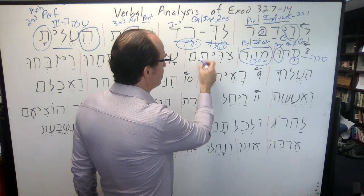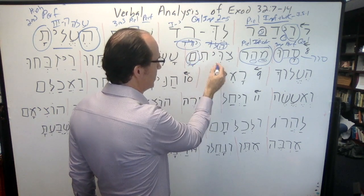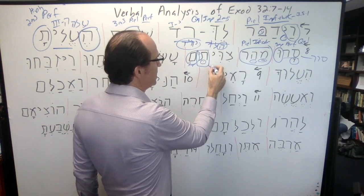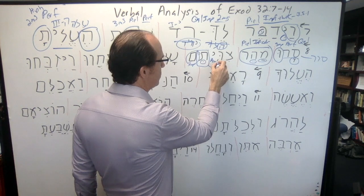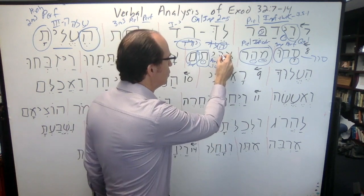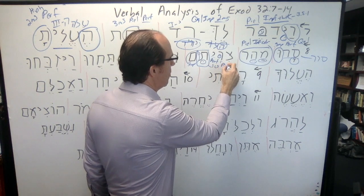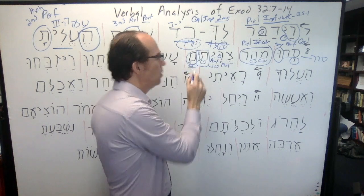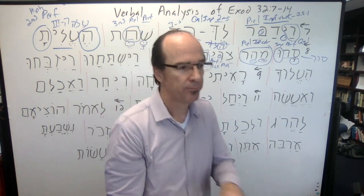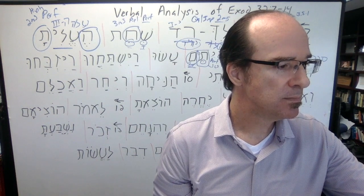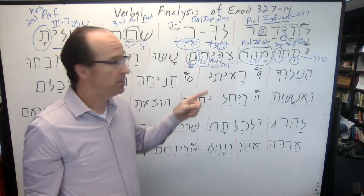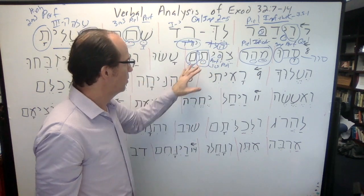Next verb: there's your 3MP suffix. Notice this vowel — this is a hiriq yod written defectively, so this is actually your first common singular. This is a perfect, because we know it from the tav. The root is from tsavah — command. You notice a doubled radical, so this is a Piel. A Piel perfect, first common singular, with a third masculine plural ending — 'which I commanded them.' The Piel here is factative or maybe denominative; the perfect is fientive.